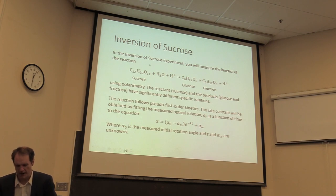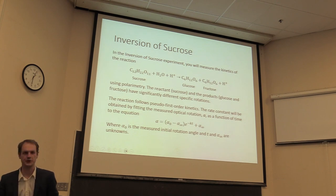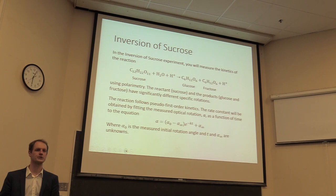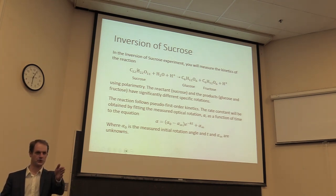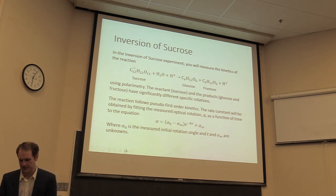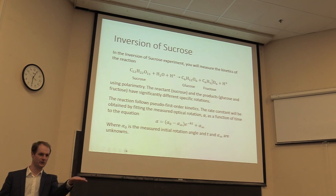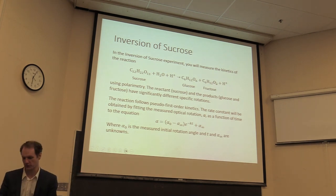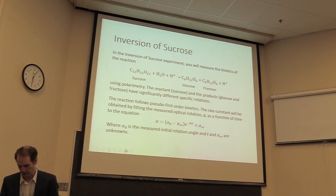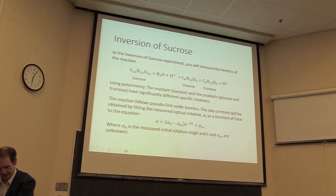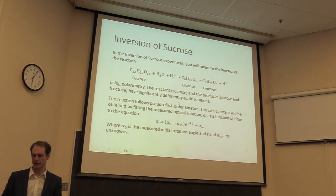Just as a reminder, in this experiment you are decomposing sucrose into its components, and you're following the course of the reaction by using polarimetry — measuring the rotation of plane polarized light as it passes through the sample. As the sucrose gets converted to glucose and fructose, the polarization rotation changes, and you're fitting to the equation shown here. We did this fit last time and got some results.